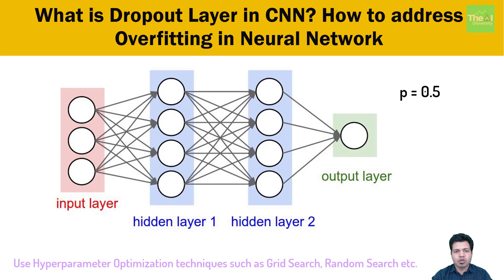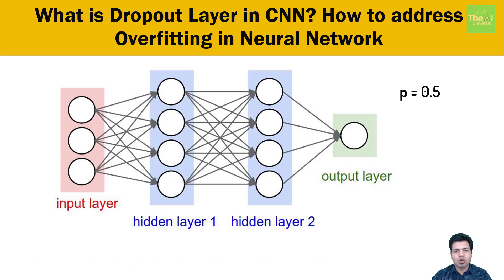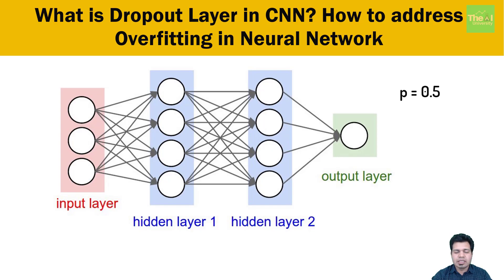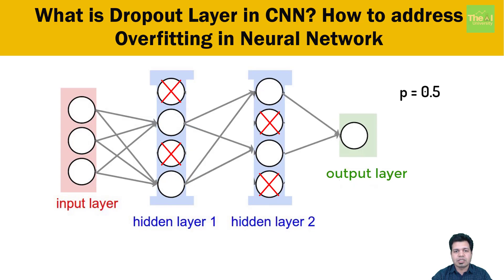If you want to find the exact value of p for your particular neural network, you can use hyperparameter optimization techniques like grid search or random search. This 0.5, or 50% probability, means there is a 50% chance that any neuron can be dropped out or knocked off. Based on this probability value, neurons are picked randomly to get dropped out or inactivated — meaning there is a 50% chance the output of a given neuron will be forced to zero. In our diagram, two neurons of the first hidden layer and two neurons of the second hidden layer get deactivated in the forward propagation. This means there are no input or output connections to these inactivated neurons.